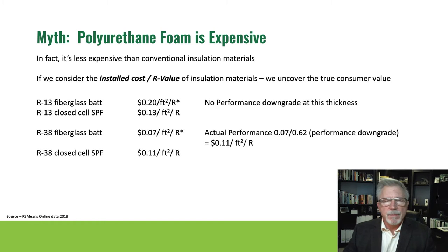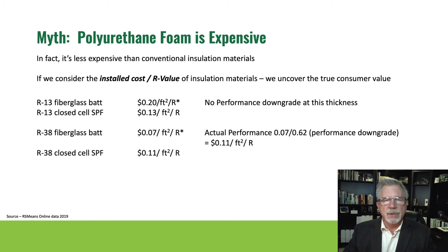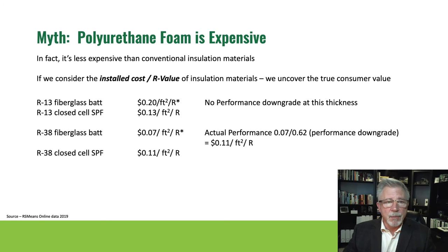R13 fiberglass batt is about 20 cents a square foot per R. You take the installed cost of fiberglass for R13, divide it by the R-value, and that gives you your square foot cost per R. These numbers are taken from RS Means, which is a database for all construction materials, their installation costs, and raw material costs — it's been used for years, so we'll use it here in today's example.